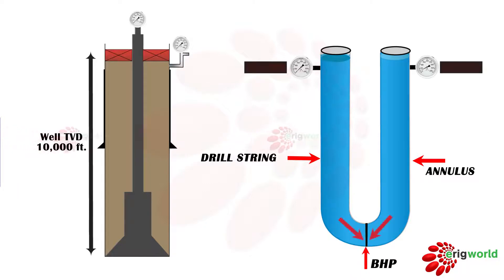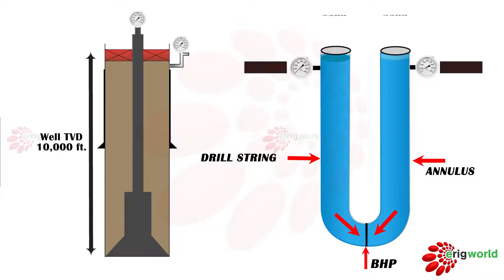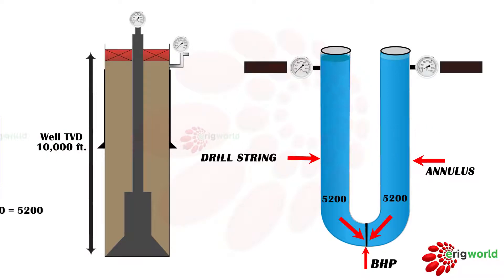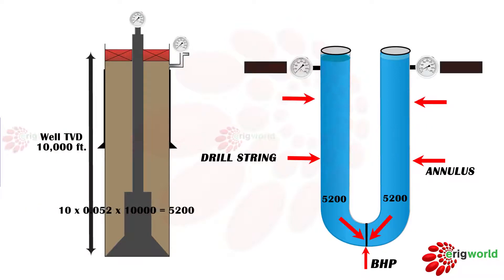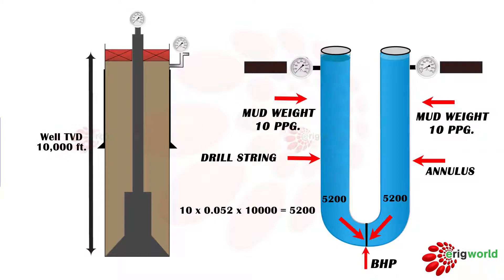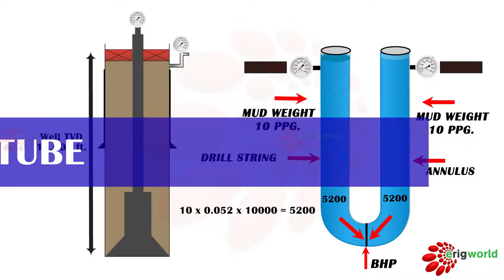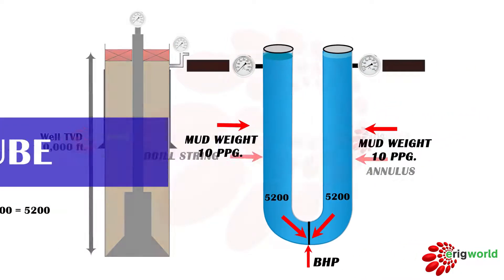The hydrostatic pressure created by the mud column can be calculated using the formula, which equals 5200 psi. Since both sides have the same mud weight, the pressure exerted will be 5200 psi on both sides. This is called a balanced U-tube.